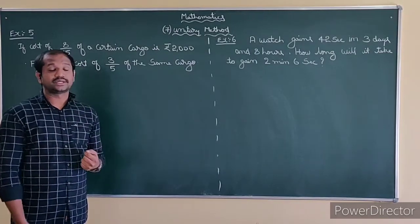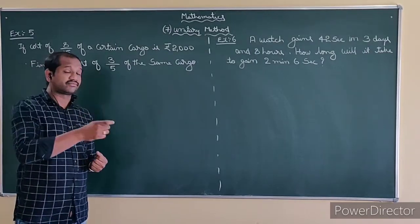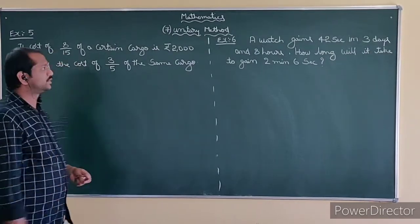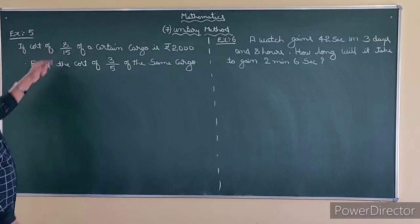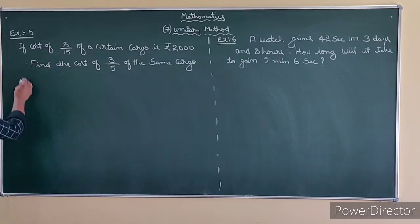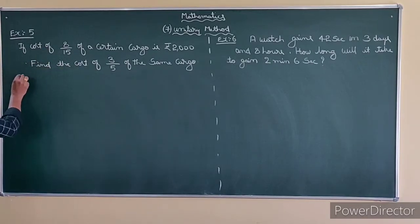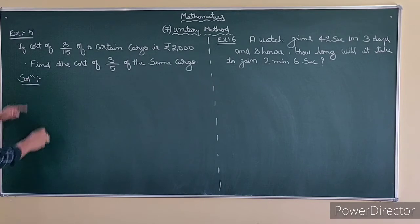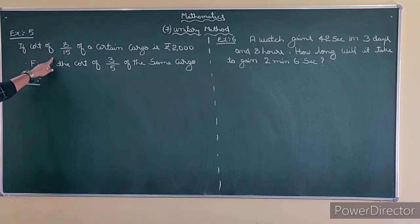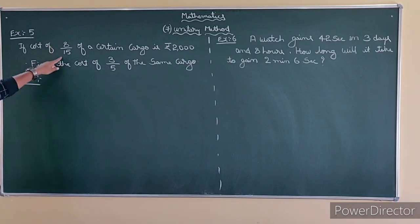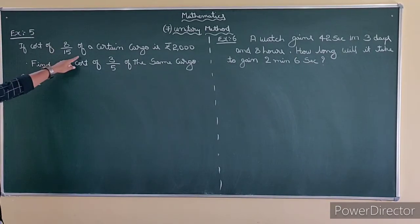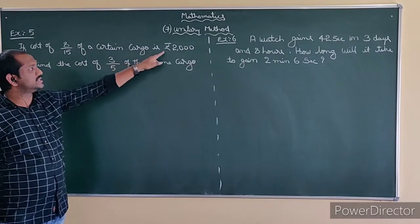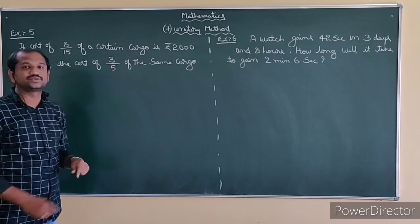The conversion is what you need to learn — whenever you get a fraction, how to do a problem, we will repeat. So we have to make an example of 5 first. The cost of 8.50 of a certain cargo is Rs. 2000.